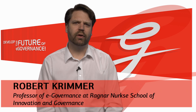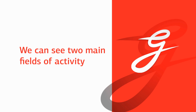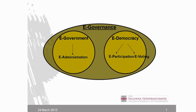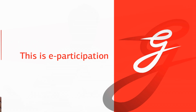When we talk about e-democracy — about using IT for supporting the democratic process — we can see two main fields of activity. On the one hand, it is about preparing decisions, supporting the information-gathering and decision-making process when people form their opinion. That is the so-called e-participation field, in contrast to the one where it's really about the actual decision, which is called e-voting.